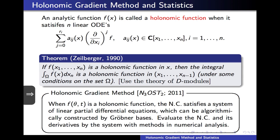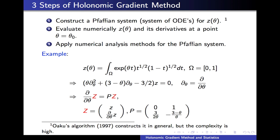Based on these works, we proposed to apply these methods to statistics — this is the holonomic gradient method. When f of theta and t is a holonomic function, the normalizing constant satisfies a system of linear partial differential equations which can be algorithmically constructed by Gröbner bases. The holonomic gradient method consists of three steps. The first step is to derive a system of linear partial differential equations for the normalizing constant and translate the system into a Pfaffian system, which is, roughly speaking, a set of ordinary differential equations with respect to the parameter vector theta for the normalizing constant.